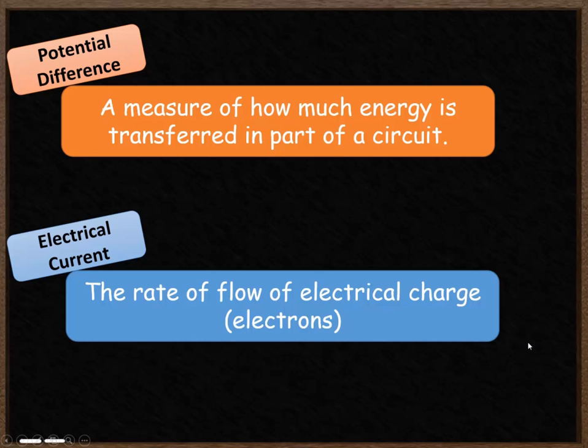So to summarize, potential difference is a measure of how much energy is transferred in part of a circuit. You can measure it for the whole thing or smaller sections of your circuit. Electrical current is the flow or the rate of flow of the electrical charge moving through your circuit. And these two things are related to each other. If you have a higher potential difference, it's very likely that you'll have a higher current.